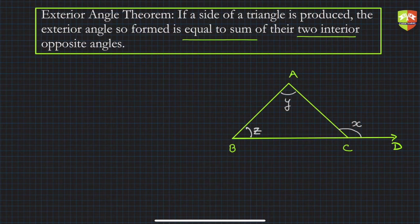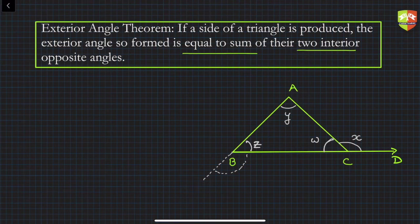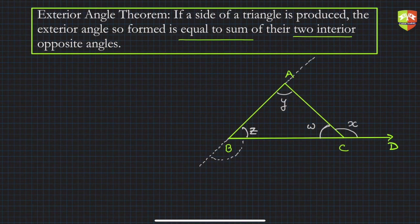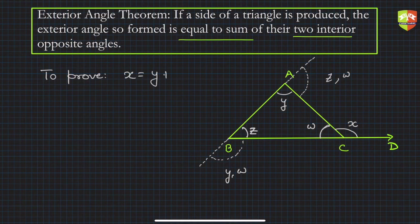This angle at the same vertex is the supplement of the exterior angle, so it is not an interior opposite angle. The interior opposite angles are the other two angles — let's call the third interior angle w. So for exterior angle x, the interior opposite angles are y and z. To prove: x equals y plus z.